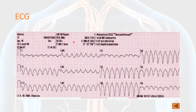Another criterion is AV dissociation, which means there is no relationship between P-waves and QRS complexes. The fourth feature is concordance of QRS complexes in chest leads — this means all QRS complexes have either positive or negative deflection in chest leads V1 to V6. Other features of ventricular tachycardia include lack of right bundle branch block or left bundle branch block patterns, and presence of capture or fusion beats, which are topics discussed in other videos.